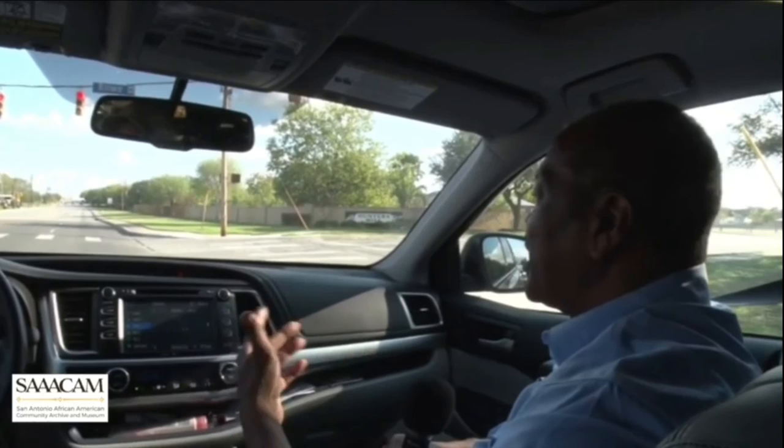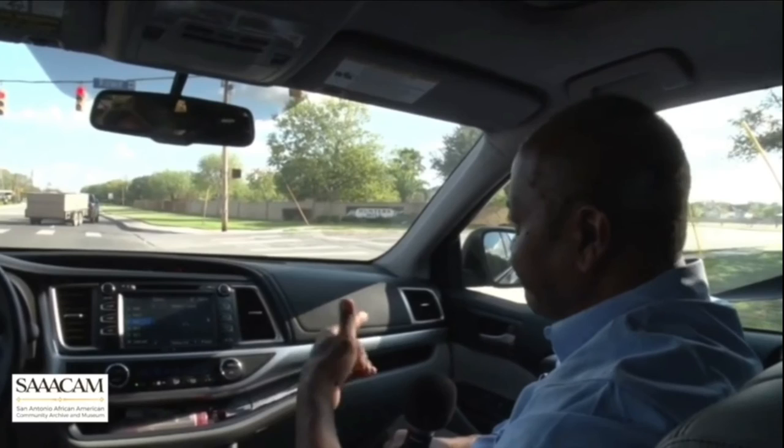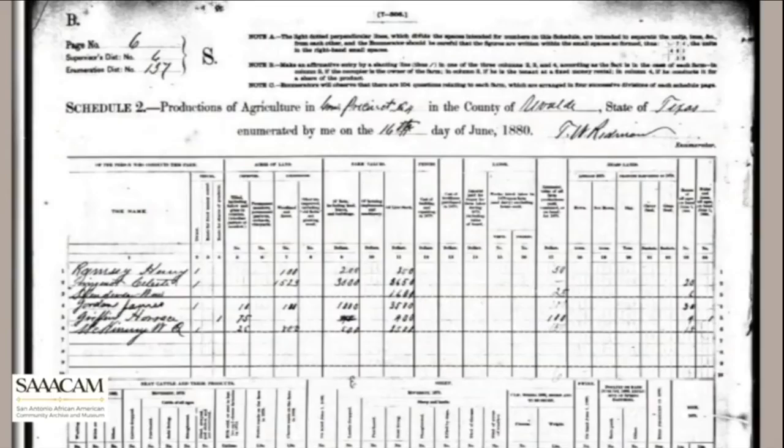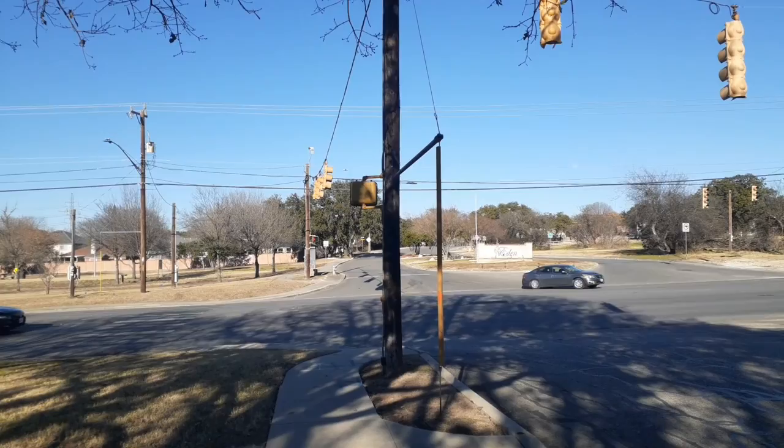Driving a wagon 45 miles back and forth was what Horace did for a living. And once they accumulated this land, they grew cotton, corn, and other produce, and they had cattle.